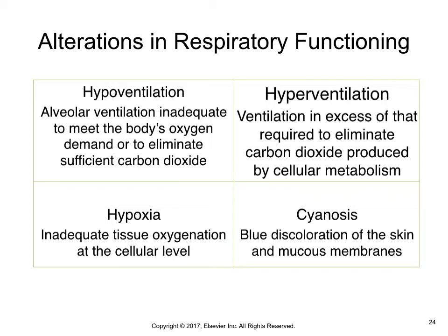The presence or absence of cyanosis is not a reliable measure of oxygen status. Central cyanosis, observed in the tongue, soft palate, and conjunctiva of the eye where blood flow is high, indicates hypoxemia. Peripheral cyanosis, seen in the extremities, nail beds, and earlobes, is often a result of vasoconstriction and stagnant blood flow.